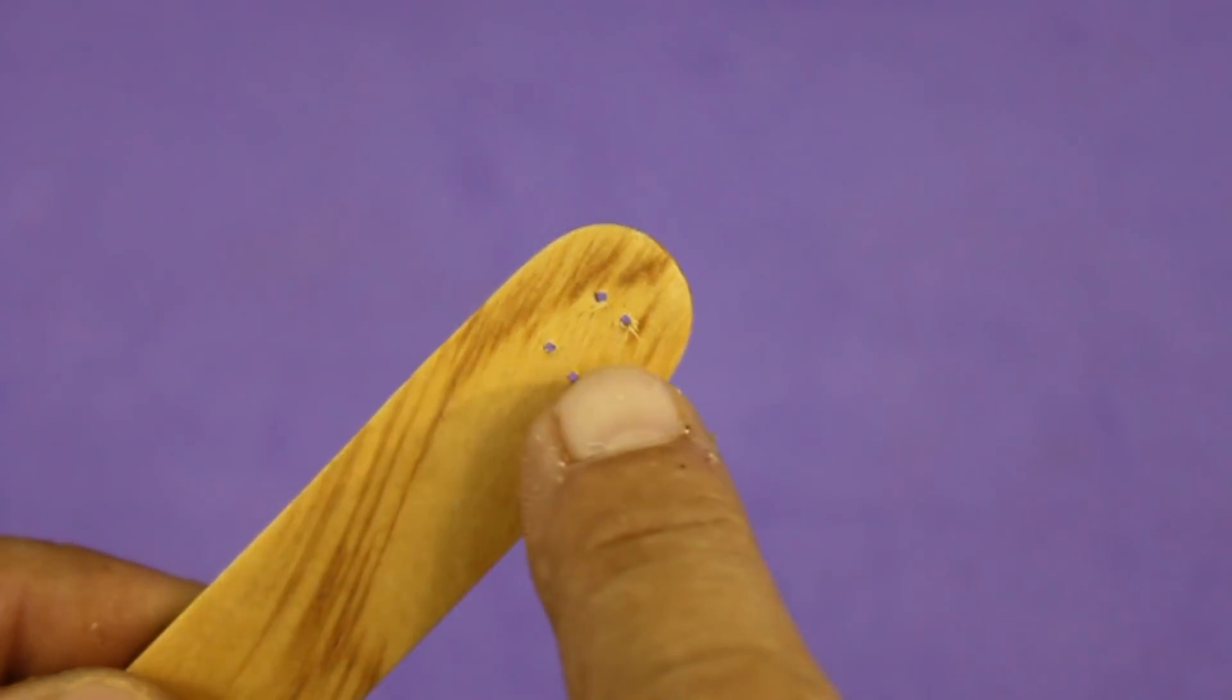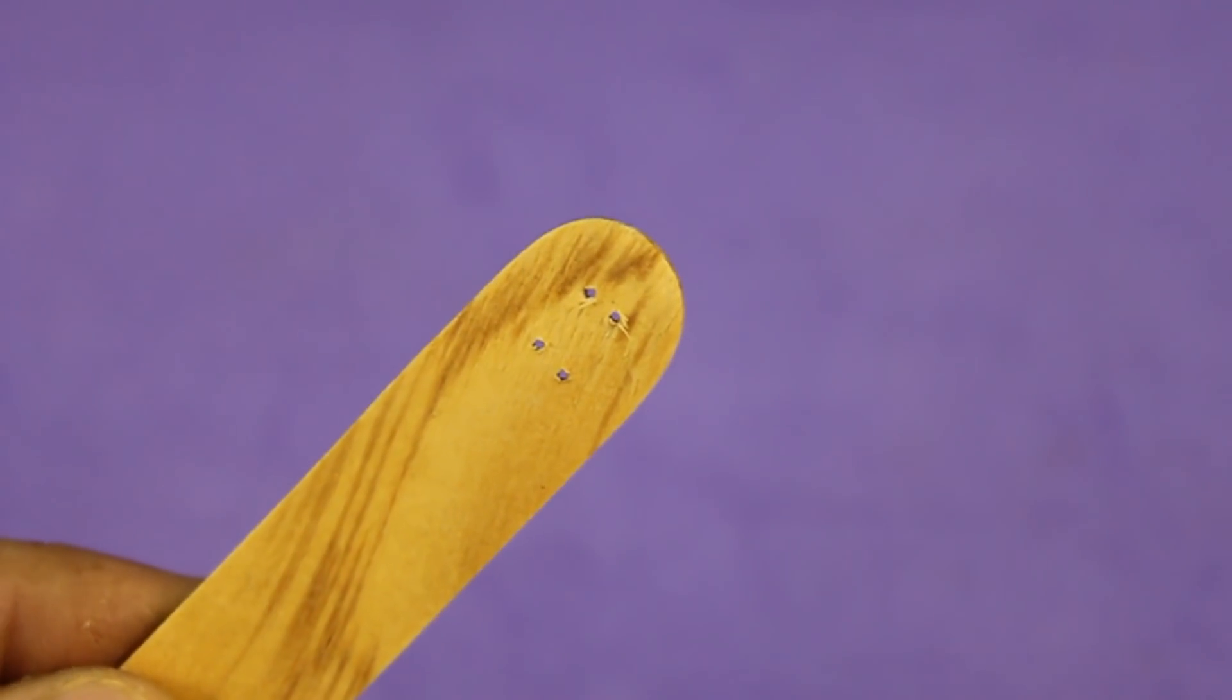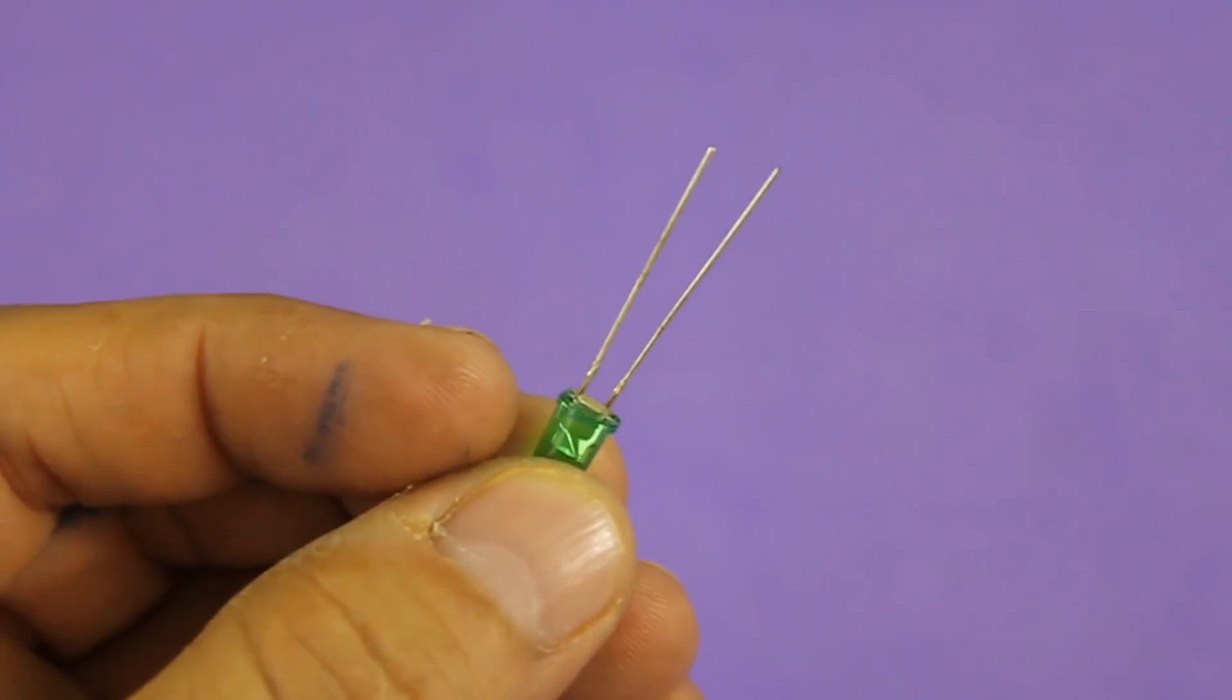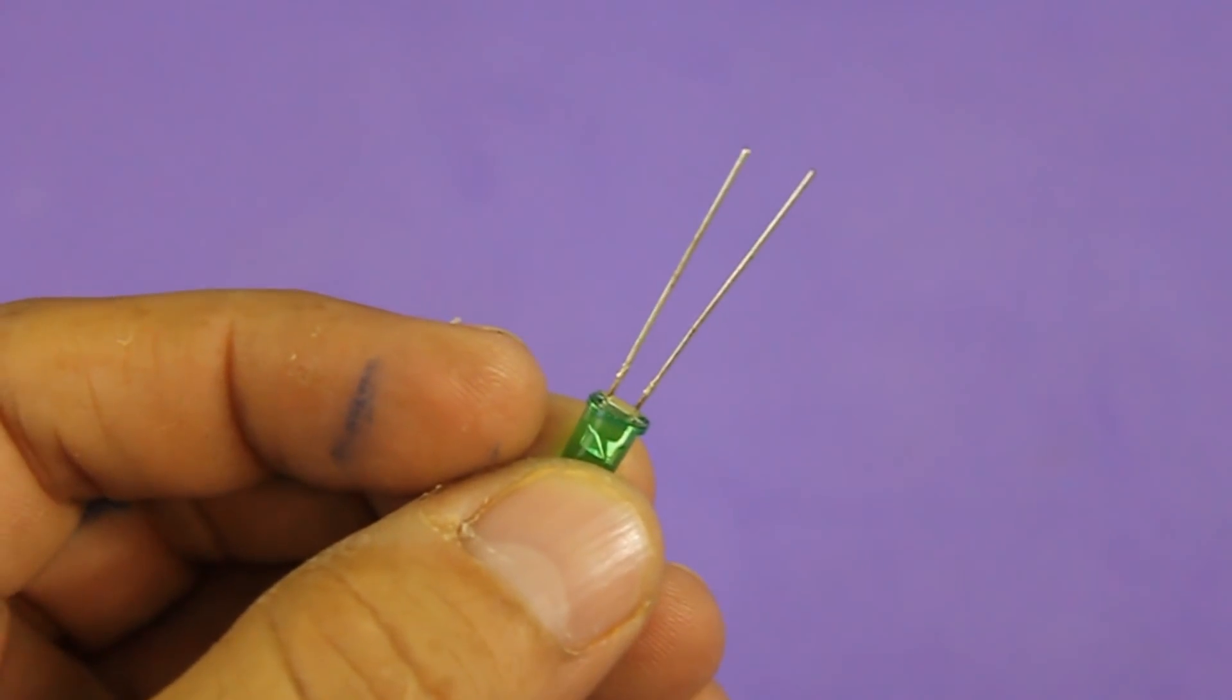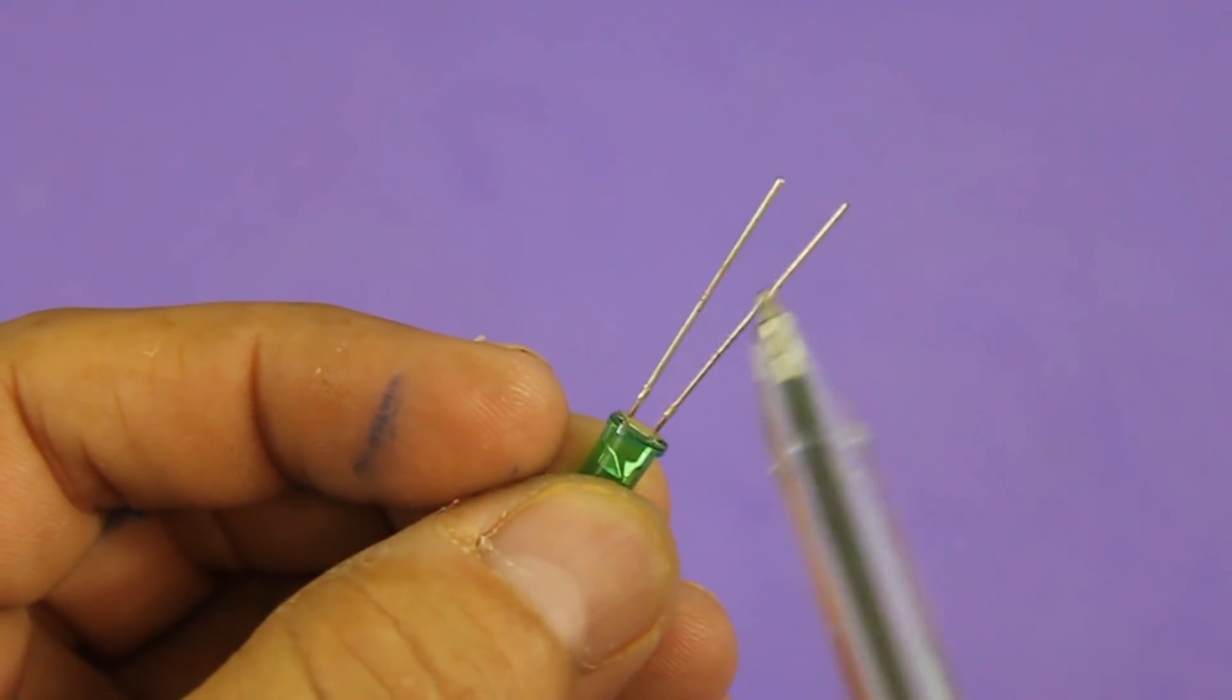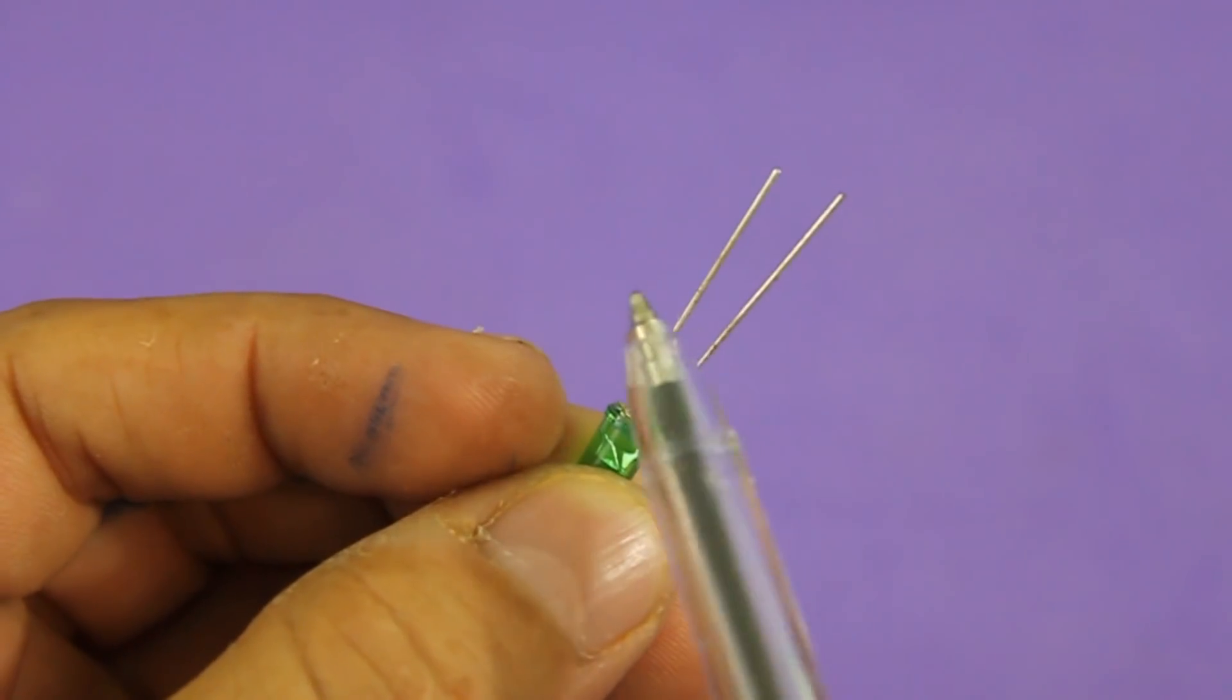Make four holes in the woodstick to put the LEDs. You can tell the polarity of an LED by the length of the legs. The long one is positive and the short one negative.